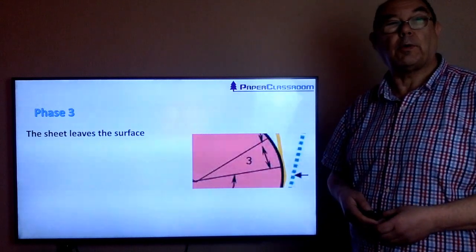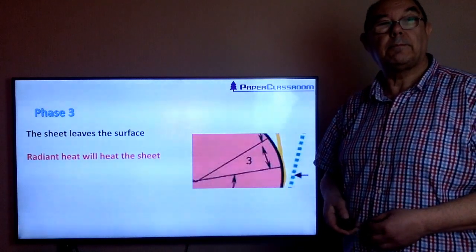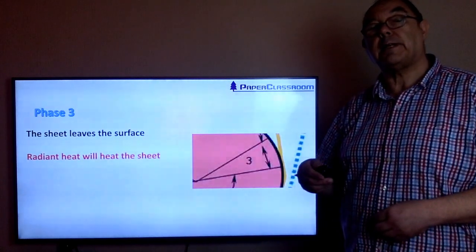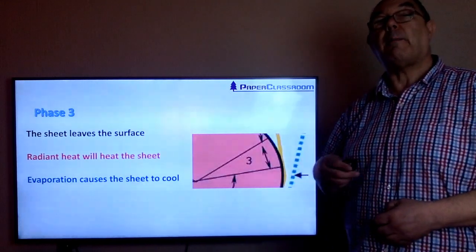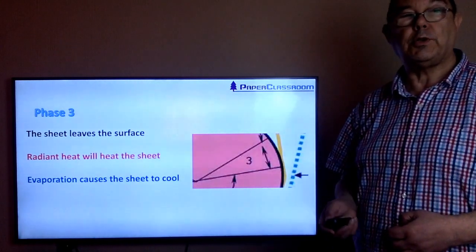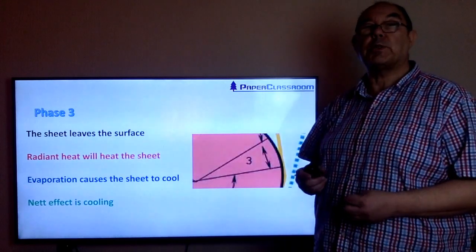To summarize that: the sheet leaves the surface, the radiant heat from the cylinder will warm it up. At the same time, evaporation from the sheet will cool it down. The net effect is the sheet will slightly cool.